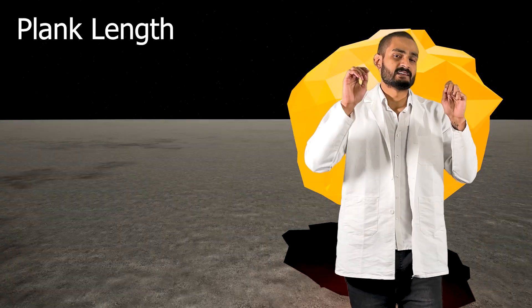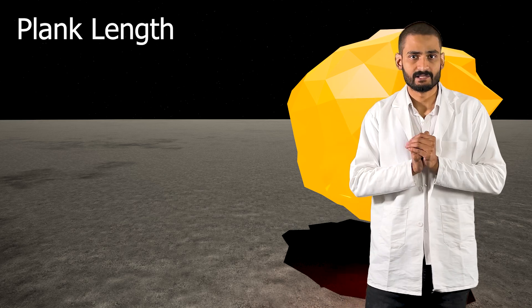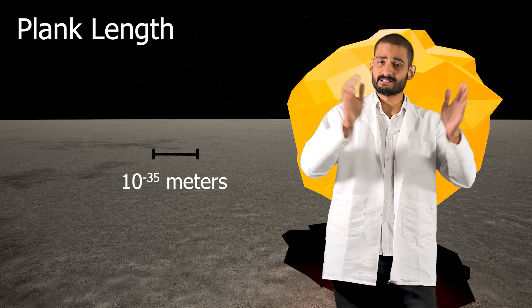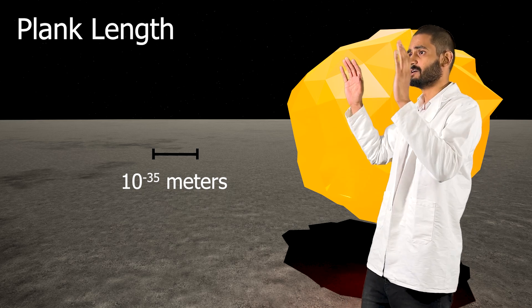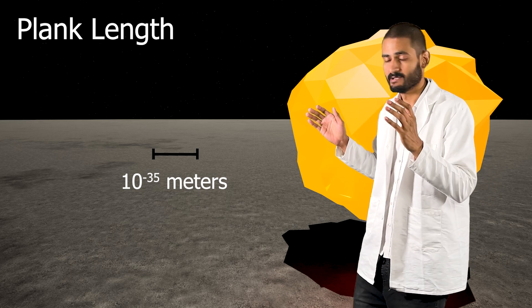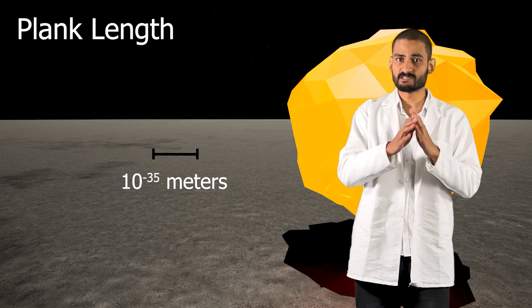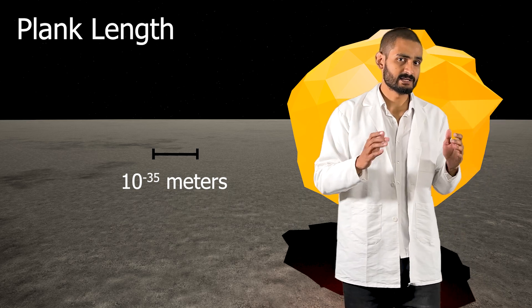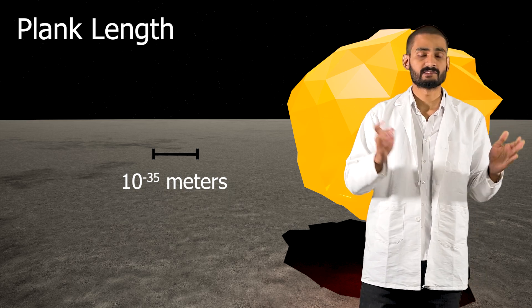Finally, we arrive at the smallest possible thing in the universe, at least theoretically, the Planck length or 10 to the power minus 35 meters. This is the ultimate limit of the universe. Beyond this, the concept of length as we understand simply does not make sense and all the theories that we have just break down after this level. The Planck length is basically our understanding of the universe beyond which nothing should exist.